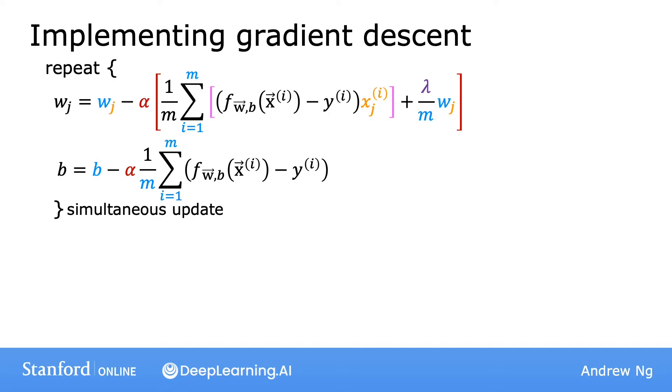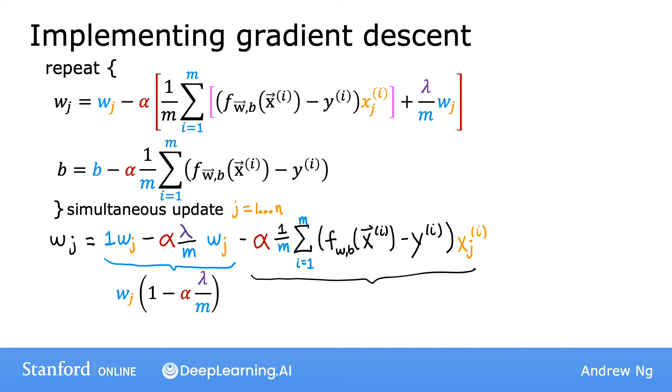Let's look at the update rule for w_j and rewrite it in another way. We're updating w_j as 1 times w_j minus alpha times lambda over m times w_j. So I've moved the term from the end to the front here, and then minus alpha times 1 over m and then the rest of that term over there. So we just rearrange the terms a little bit. And if we simplify, then we're saying that w_j is updated as w_j times 1 minus alpha times lambda over m, minus alpha times this other term over here.